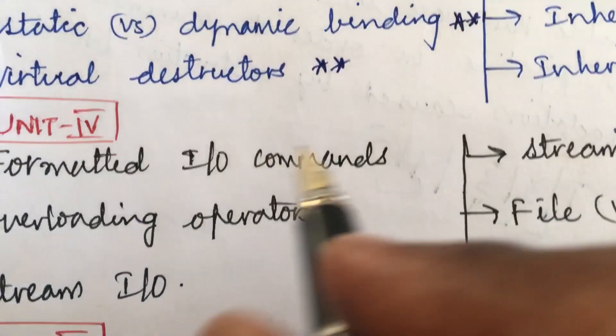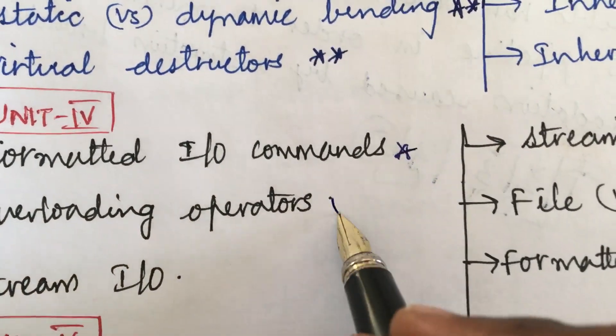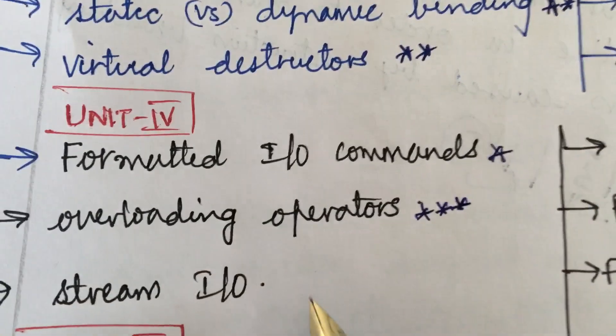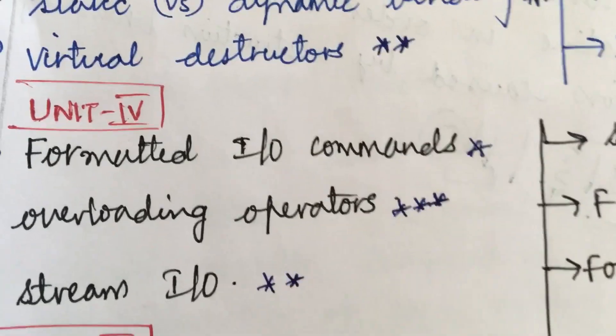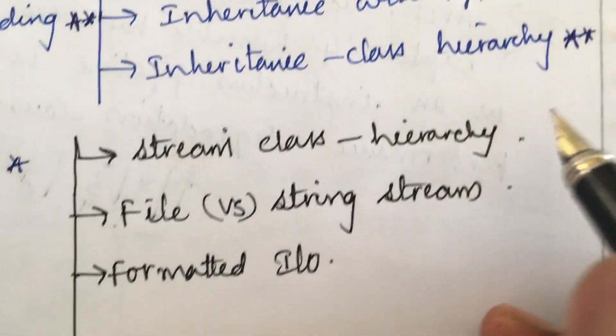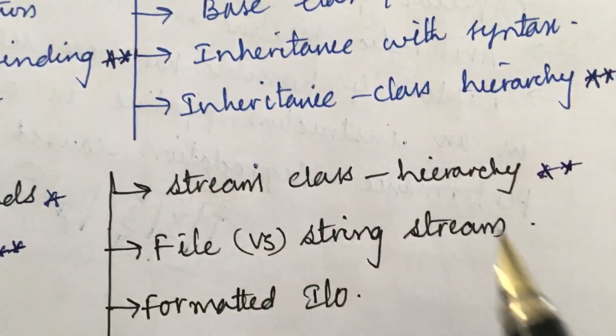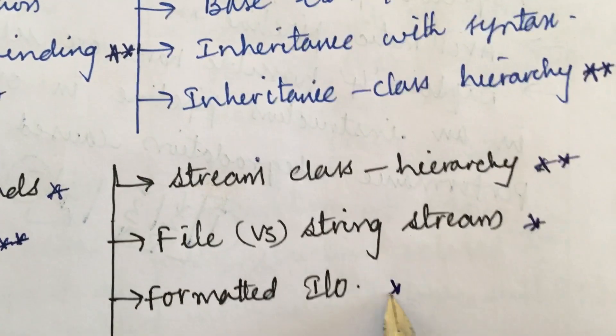The fourth unit questions are formatted input output commands, overloading operator is the topmost question, stream input output, define the term stream, stream classes and hierarchy, file versus string stream, and formatted input output.